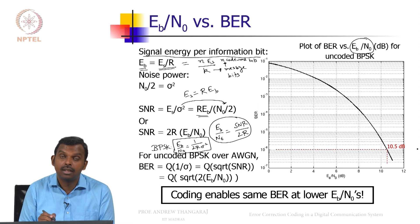So if your rate is 1, Eb over N0 is 1 by 2 sigma square. If your rate is a half, if you are taking N to be 2 times k, then your Eb over N0 is 1 by sigma square.